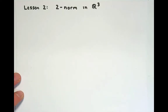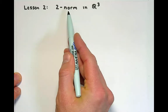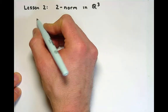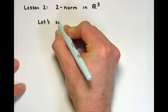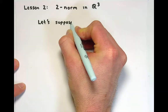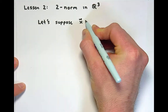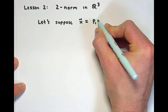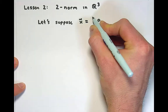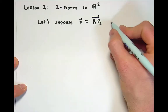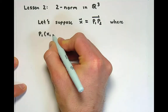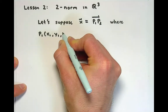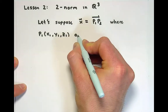Welcome back. In this video, we're going to define our first operation on vectors in R3, which we call the 2-norm. To begin with, let's suppose that we have a vector that connects two points in R3. We'll call this vector x, and we'll say that it connects points P1 and P2, where P1 is the tail and P2 is the head. Each of these are points in R3, meaning that they are ordered triplets of real numbers.